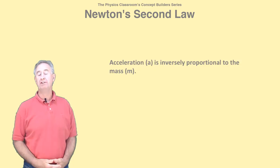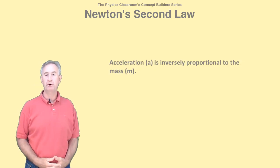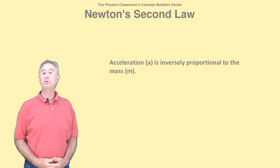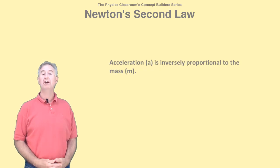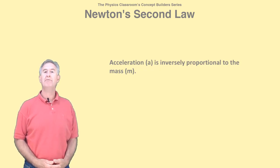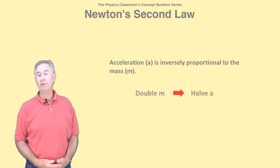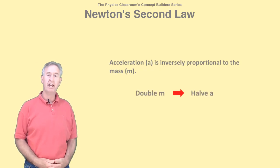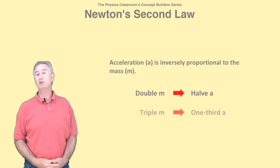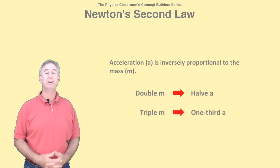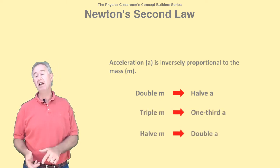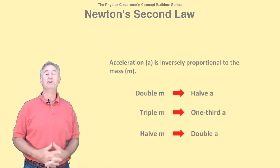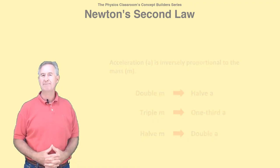The acceleration and mass are inversely proportional. That means whatever change is made to M, the inverse or reciprocal change is made to the A value. If the mass is doubled, the acceleration is halved. If the mass is tripled, the acceleration is one-third the original value. And if the mass is half, the acceleration is double.